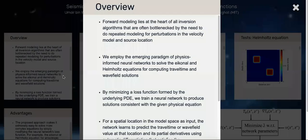One of the problems we face in seismic inversion is that we need to do a lot of forward modeling which lies at the heart of all inversion algorithms. Oftentimes these algorithms are bottlenecked by the need to do repeated modeling for perturbations in the velocity model and source location. Even with slightly different velocity models, we need to spend the same amount of computational effort, and therefore there is no transfer of information between one simulation and the next.